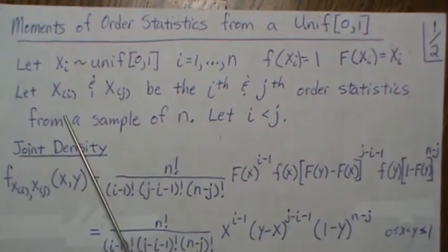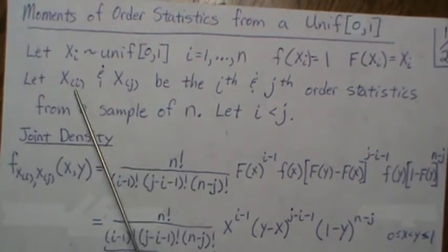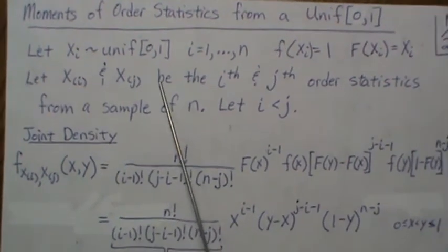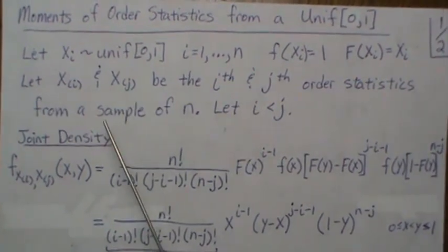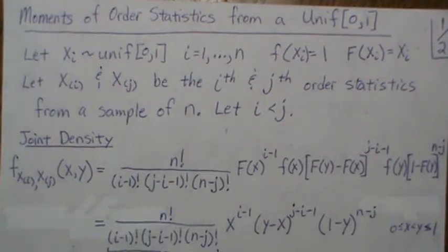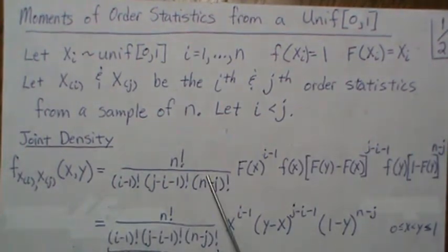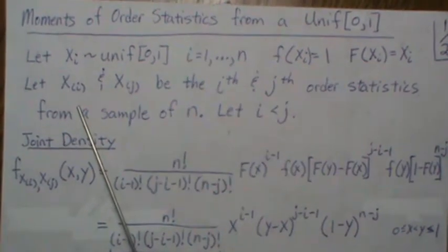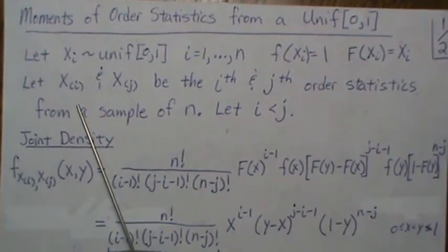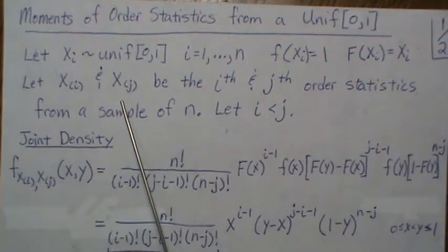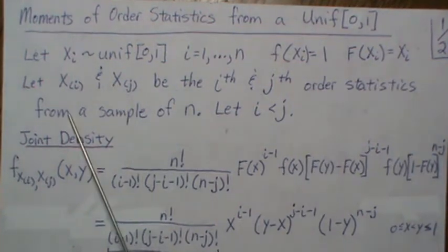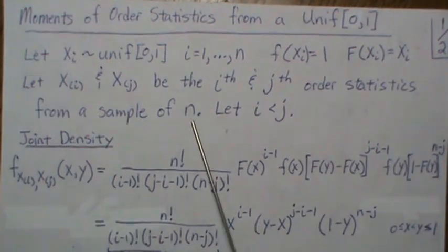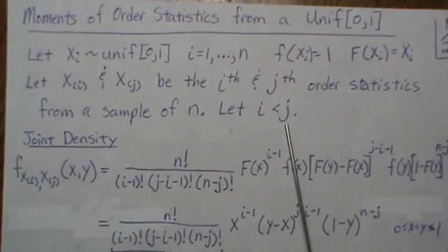We're going to let X(i) and X(j), and notice that there's parentheses in i and j, that's the common notation meaning we're in order statistics. So they're the ith and jth order statistic, that means it's the ith largest observation in our sample and the jth largest observation in our sample. This is from a sample size n, we're going to let i be less than j.